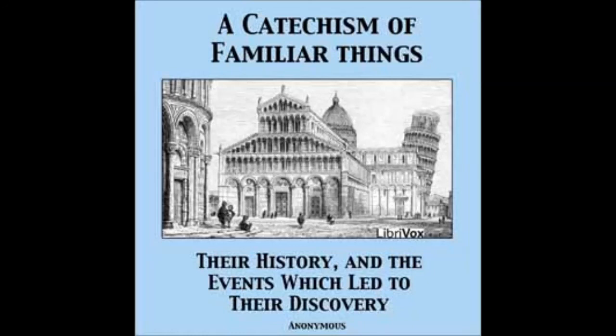Where is Genoa situated? In the northwestern part of Italy. It was formerly a flourishing republic, but belongs now to Italy. What event likewise contributed to the more rapid progress and diffusion of navigation and commerce? The Crusades. For the Genoese, Pisans, and Venetians furnished the fleets which carried those vast armies, composed of all the nations of Europe, into Asia upon this wild undertaking, and also supplied them with provisions and military stores.